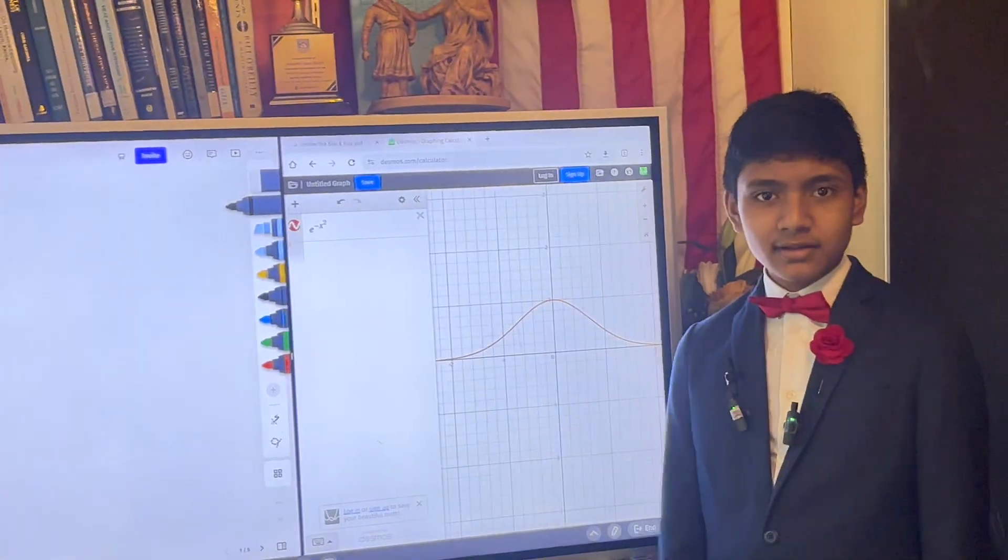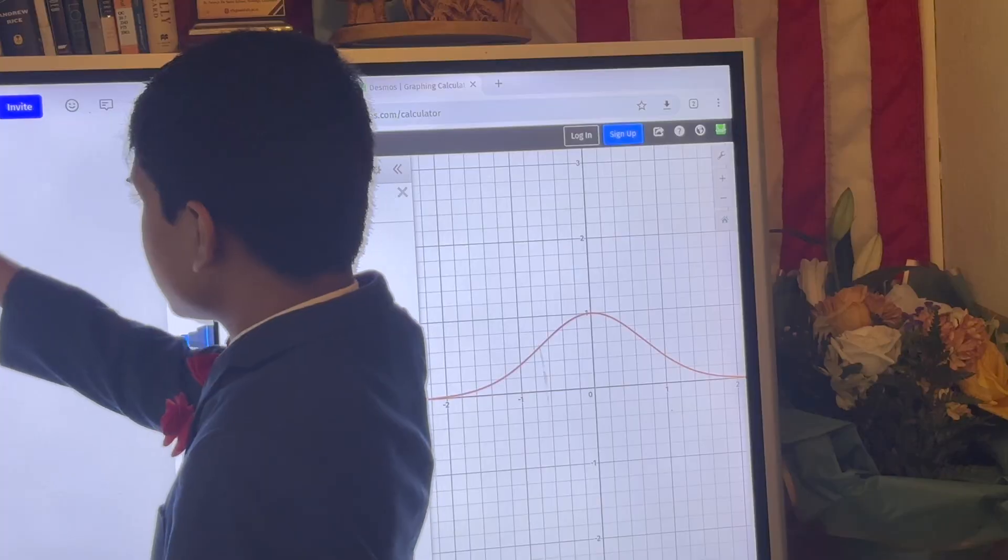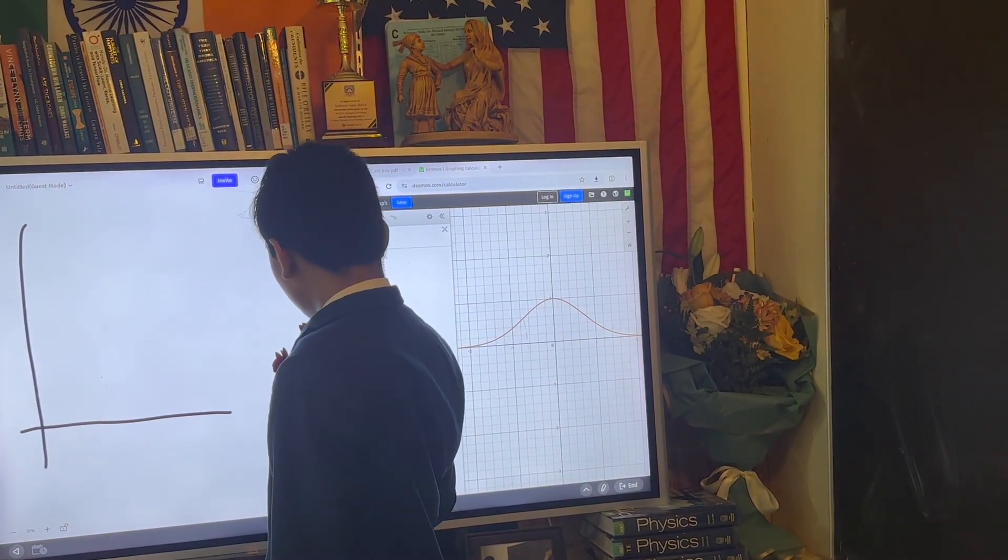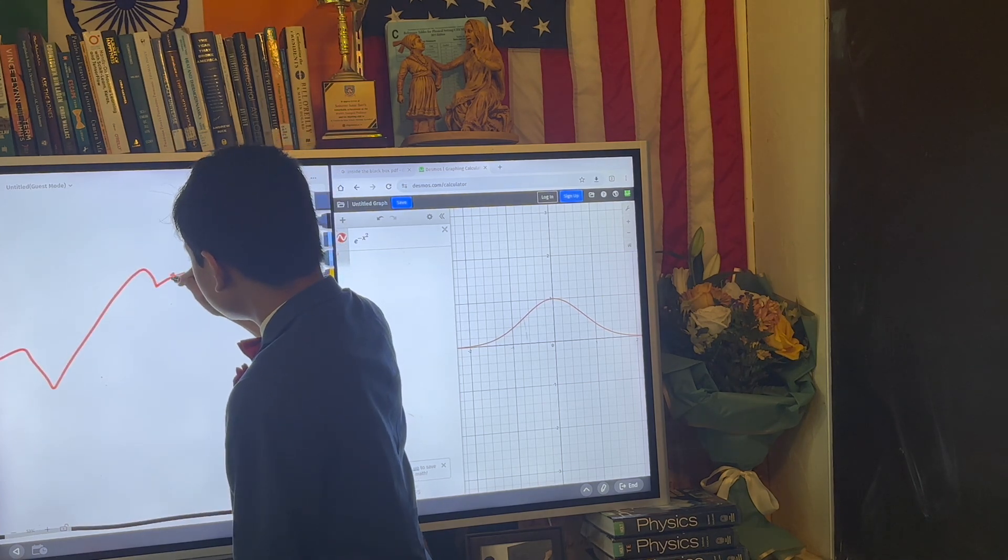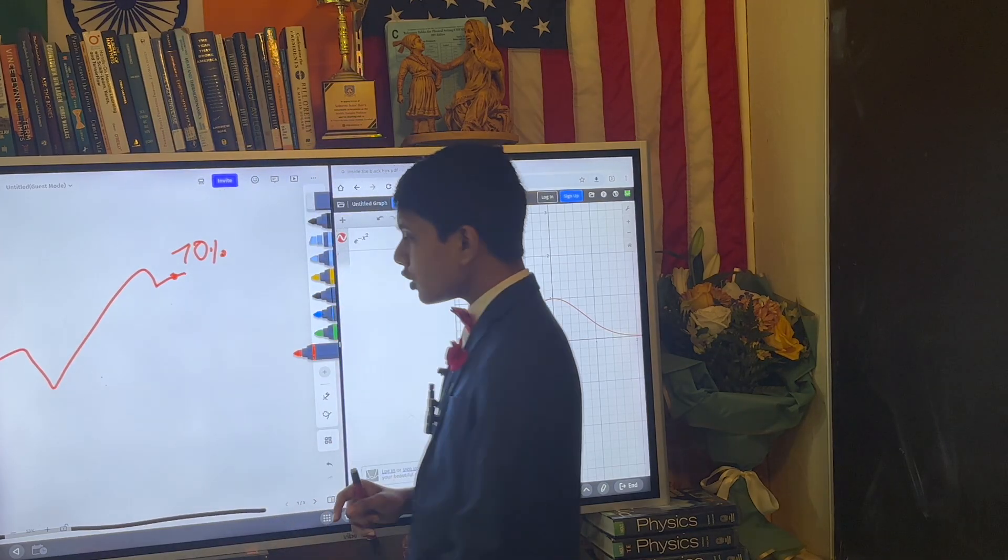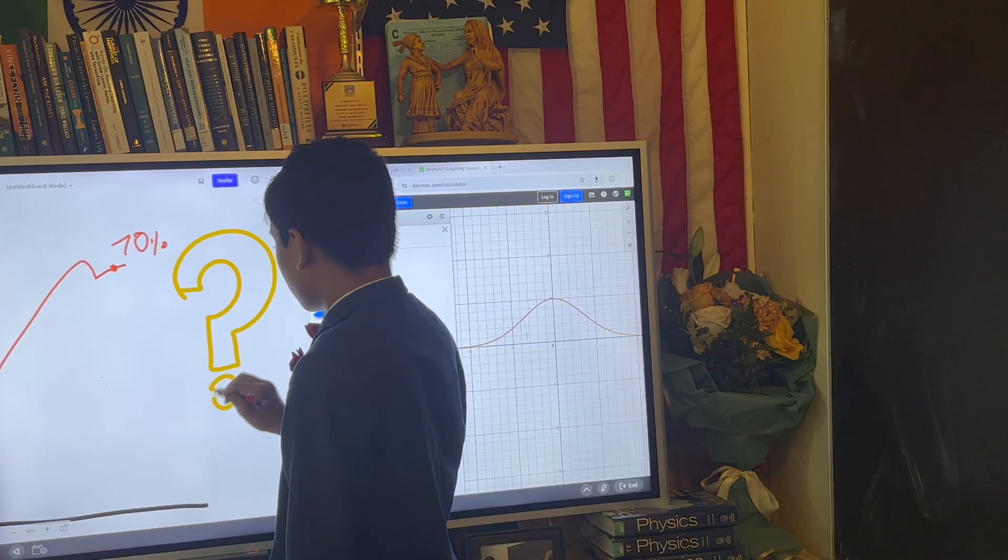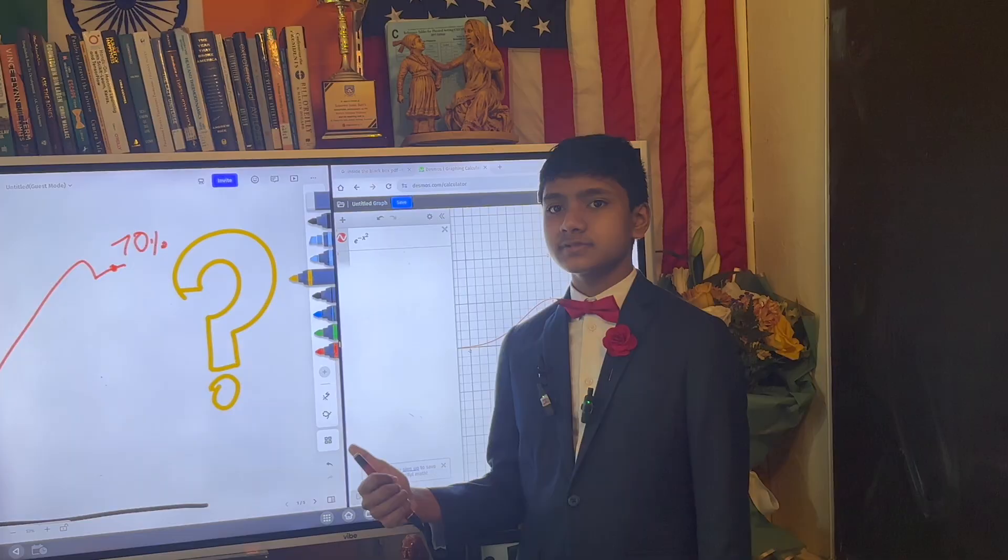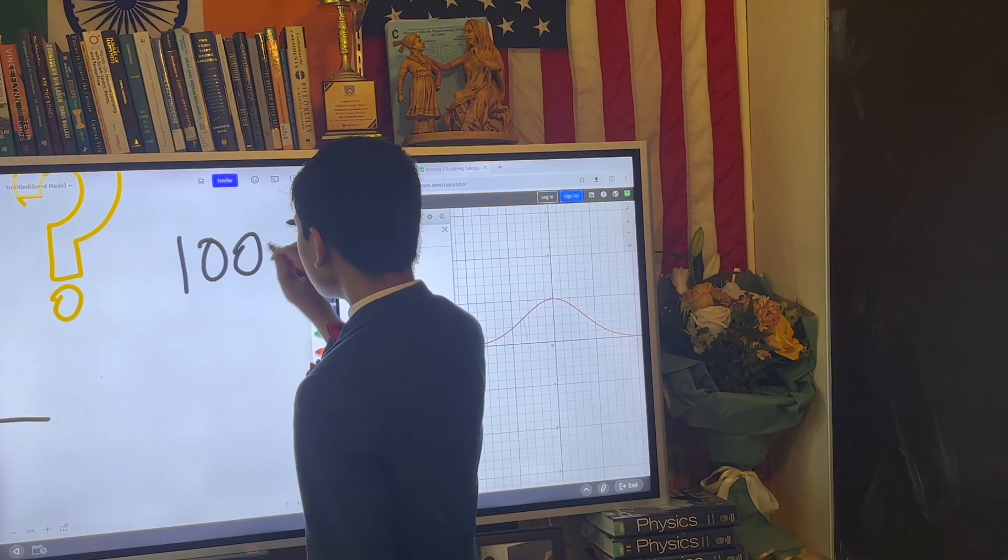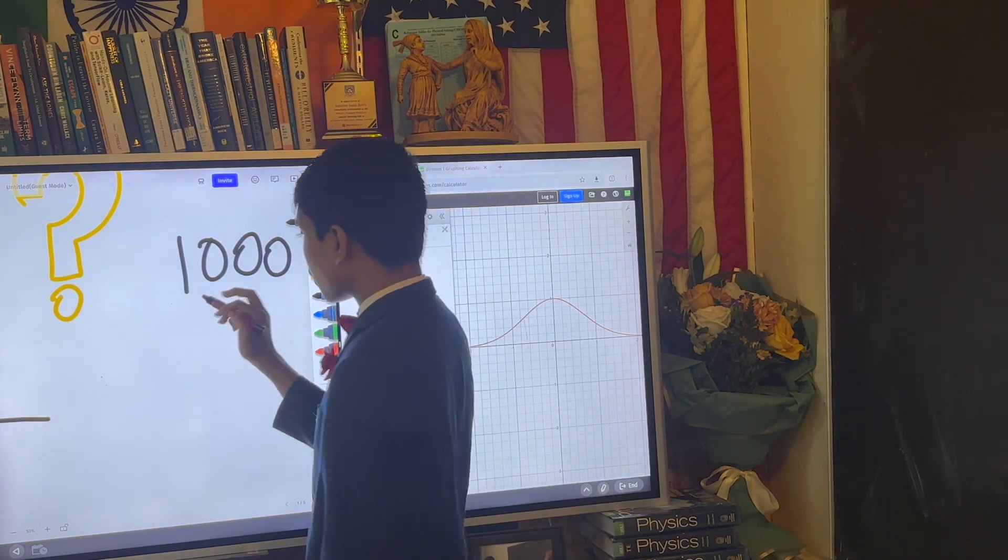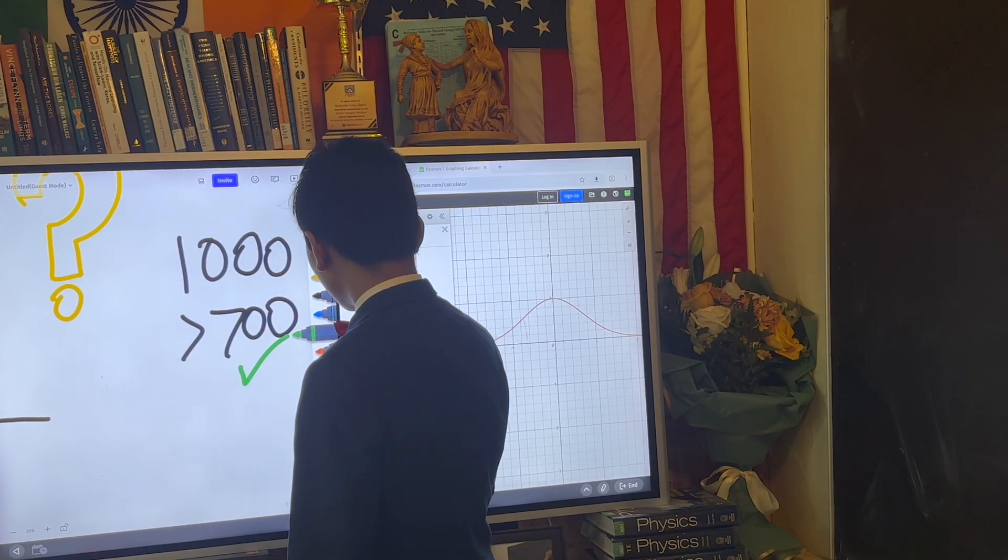But why do we care again? So why is this useful? Well, let's have a specific example. Let's say that the approval of a city mayor in a certain city by one poll is 70%. Now, another pollster is a little bit skeptical of this result and they want to test the polls themselves. So before they actually go out and do it, they think, we're going to survey 1,000 people. And then, what's the probability that more than 700 of them, like the other survey said, are going to say they approve of the mayor?